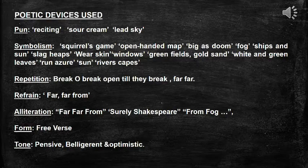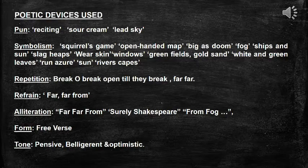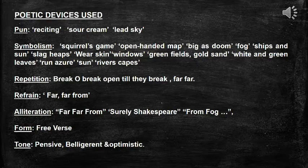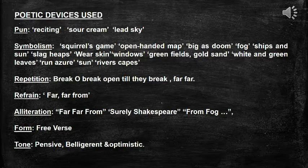'Green fields and gold sand' symbolize color, happiness, nature, and golden opportunities. 'White and green leaves' symbolize learning from books and nature. 'Sun' is a symbol of enlightenment, clarity, equality, purity, and strength. Spender has also used repetition, refrain, and alliteration. Repetition appears in 'break or break open till they break' and the phrase 'far far.' Refrain in 'far far from' stresses that these have-nots are far from normal life. Alliteration is found in 'far far from,' 'surely Shakespeare,' and 'from fog' — the letters F and S repeated. The poem is in free verse and therefore has no rhyme scheme. The tone is pensive, then belligerent, and finally optimistic.